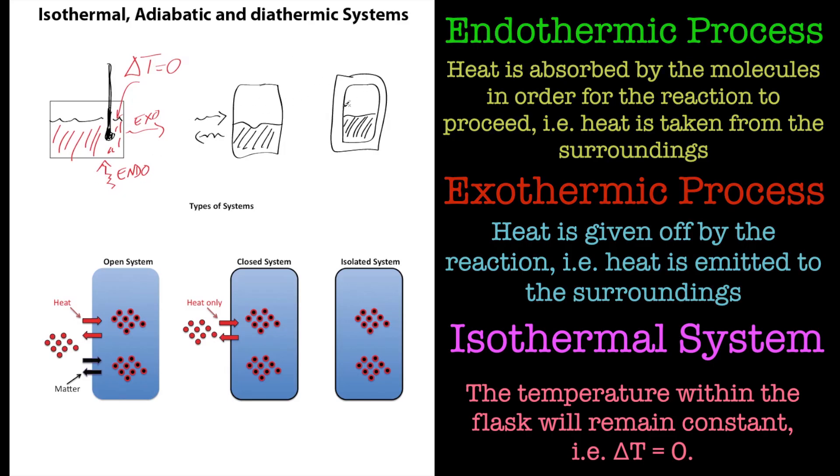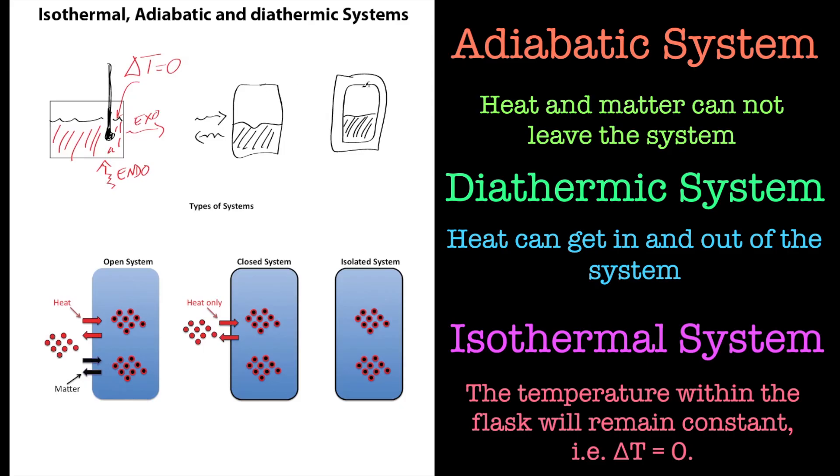So very quick recap: adiabatic system—heat can't get in or out. And for a diathermic system, heat can get in and out. So this is like a diathermic system. Isothermal just means the contents within that system are kept to the constant temperature, so the change in temperature equals zero. So that's it for now. Bye for now.